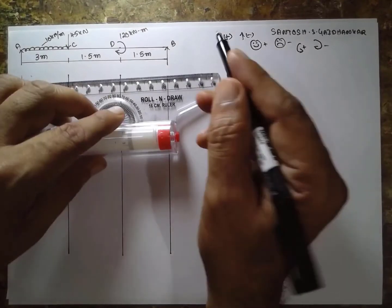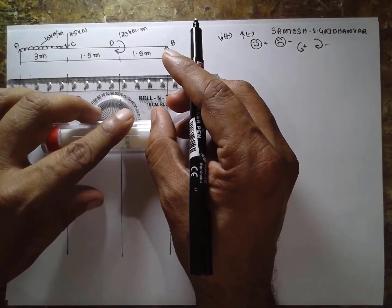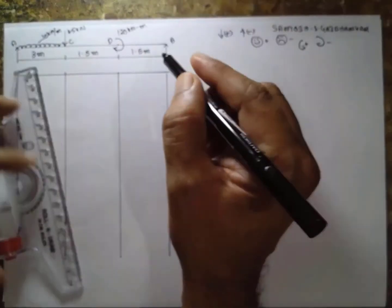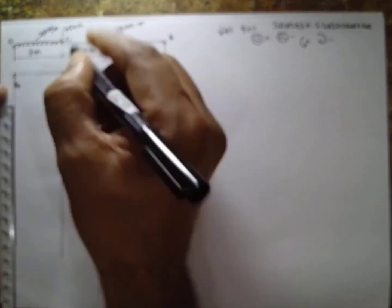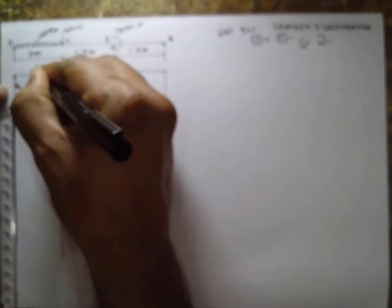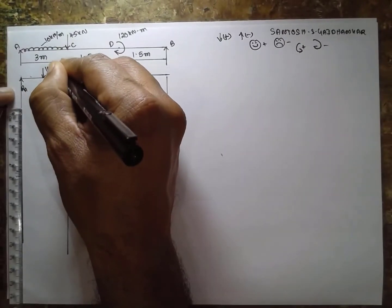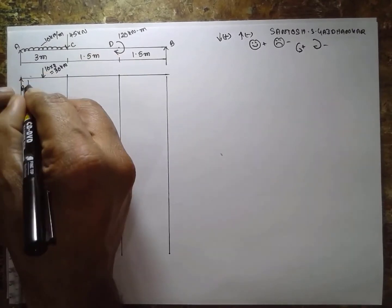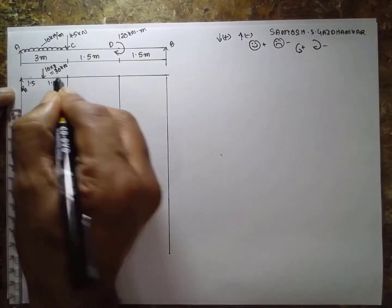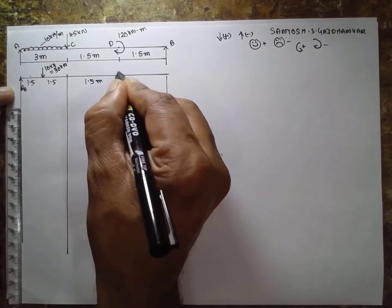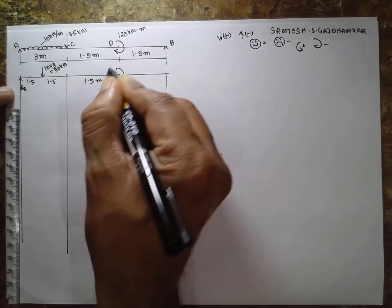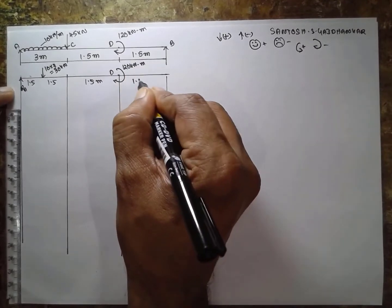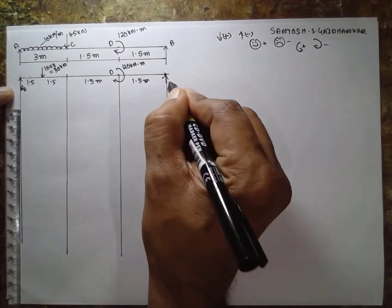First, I will convert the UDL into a point load. The reactions are provided. Ra is exactly at the center — 10 into 3, that is 30 kN for the UDL, acting 1.5 meters from each side. A couple is acting at D equal to 120 kN·m, located 1.5 meters from the end, and the reaction at the other end is Rb.